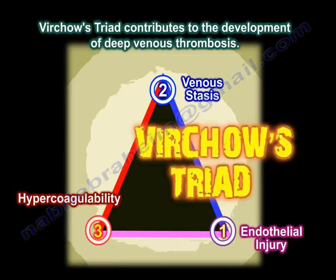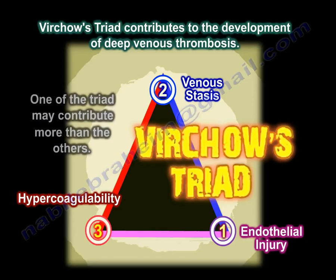If you have all three elements of the triad, you can develop a deep venous thrombosis, and one element of the triad may contribute more than the others. If you have all three elements, you probably have a higher probability of developing DVT than if you have only one or two elements.